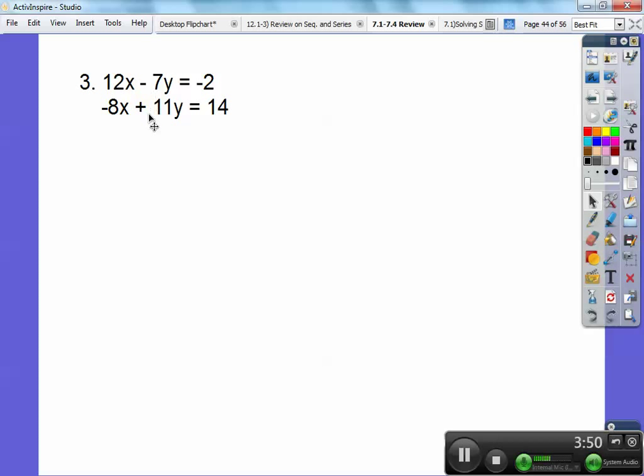And since this one's positive and this one's negative, I don't have to worry about multiplying by any negative numbers. They're already opposites of each other. So I think I did the bottom equation first. Times 3. So this times 3. This times 3. This times 3. It gives me this guy over here.